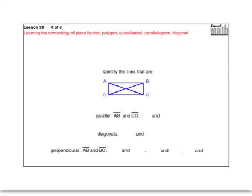Now we talked on the last lesson about how challenging it is to find parallel lines, diagonal lines, and perpendicular lines. You need to know the difference between parallel, diagonal, and perpendicular. Looking at this drawing: line segment AB goes from here to here, and line segment CD goes along this way. Those two line segments are parallel to each other. There's another set of parallel lines on that drawing — the two sides going here and here. Don't forget to put the little segment symbol above your letters. Pause the video and turn it back on when you're ready for the solution.